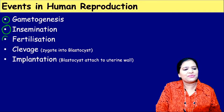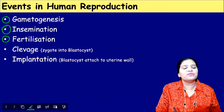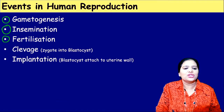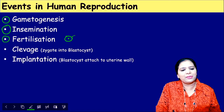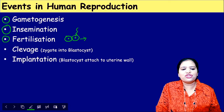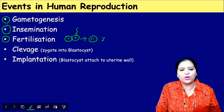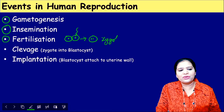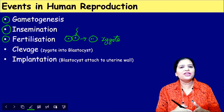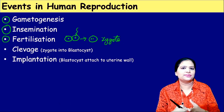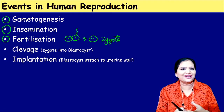After they meet, fertilization occurs. The male gamete (sperm cell) and the female gamete (egg cell) unite and form a zygote. So formation of the zygote is called fertilization — the union of the two gametes. That is the third step.